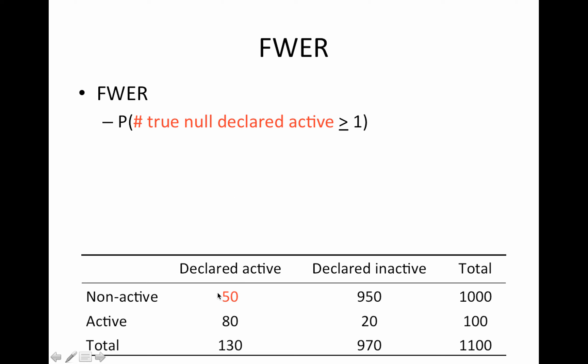So what family-wise error rate does is it's very strict. The probability it's controlling is the probability of having any false positives. So remember those simulations from a few lectures ago - the family-wise error rate row of simulated data had your 10 studies, and only 1 out of 10 studies had any false positives.